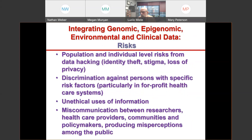What are the risks? There are population and individual level risks from data hacking, which is why All of Us data are encrypted both in transit and at rest to a level more severe than any hospital. There is risk of discrimination against persons with specific risk factors, particularly in an insurance-based healthcare system. There is risk of unethical use of information, and risk of miscommunication between researchers, healthcare providers, communities, and policymakers, which produces misperceptions among the public. We need to be extremely clear and transparent whenever we discuss this type of data.